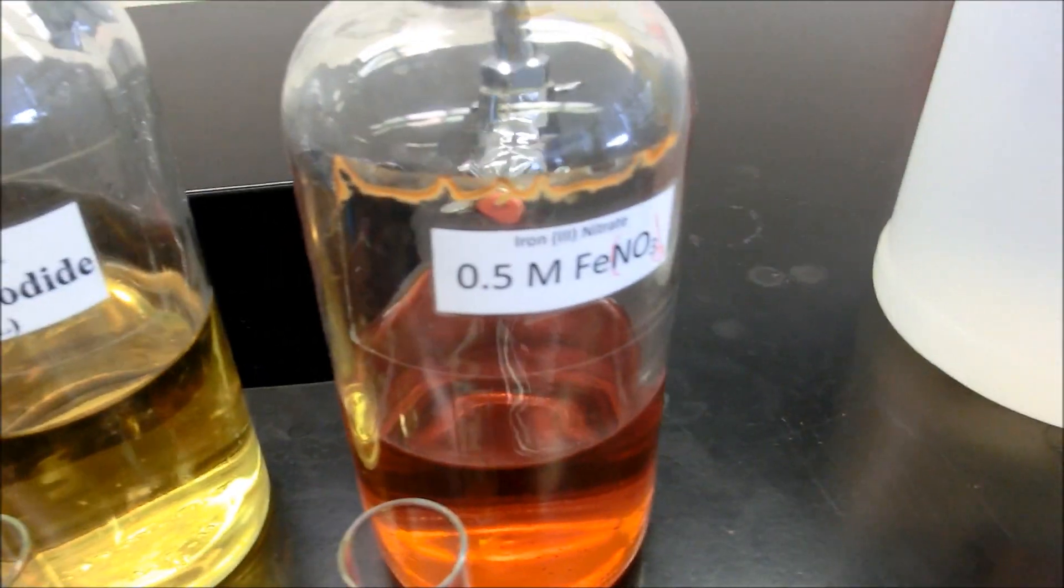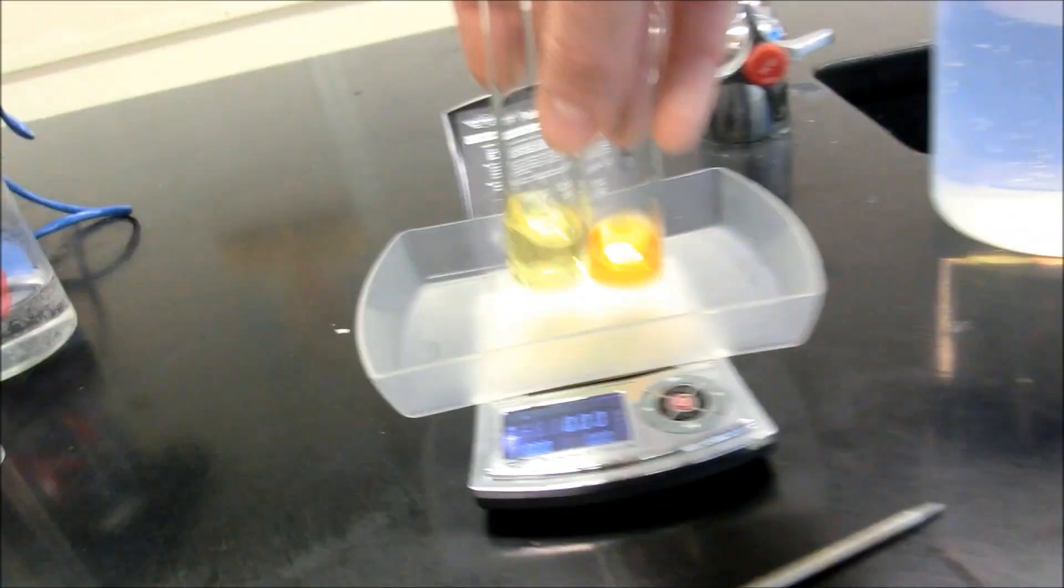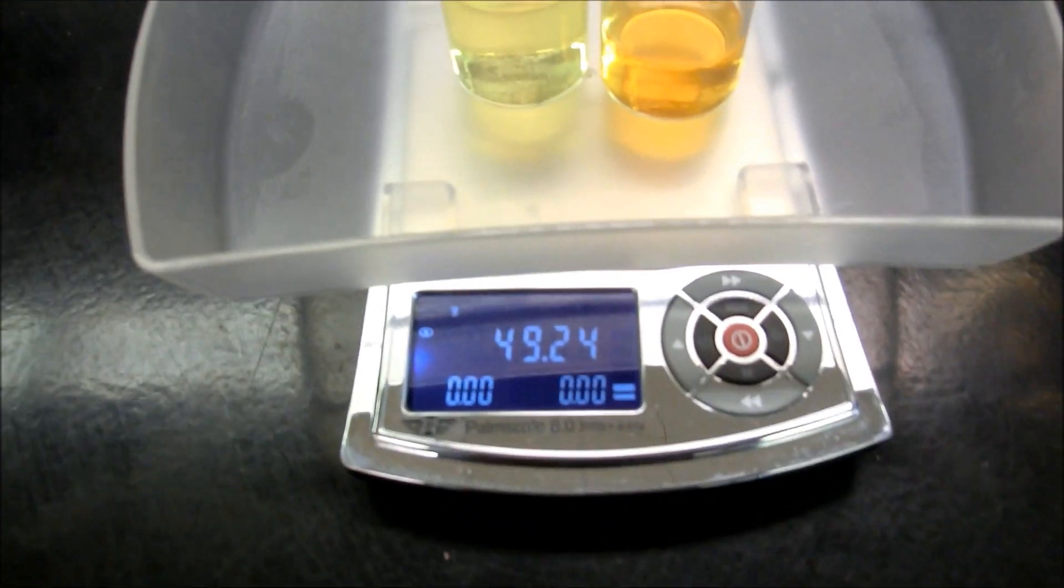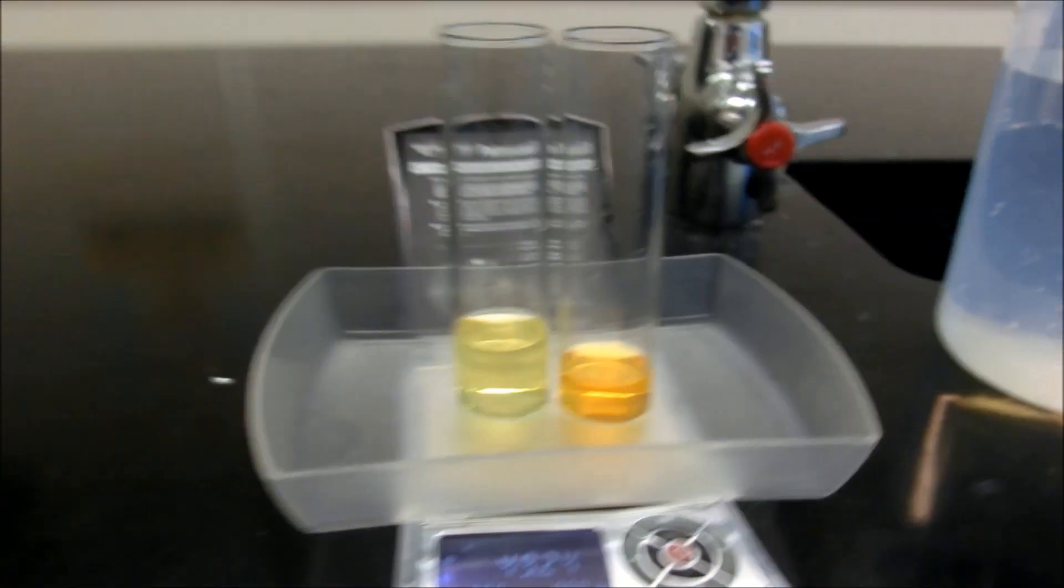Potassium iodide and iron-3 nitrate. Poured some of each of those into those containers together. Combined mass of those two is 49.24 grams.